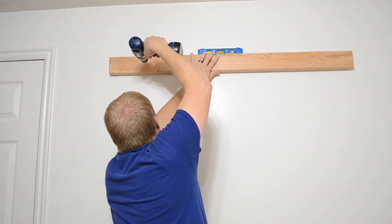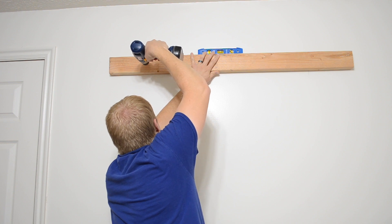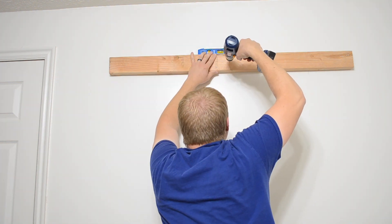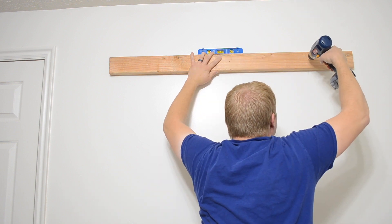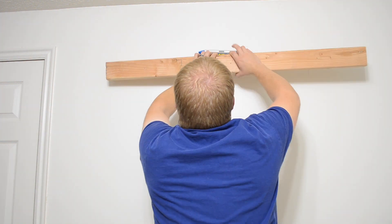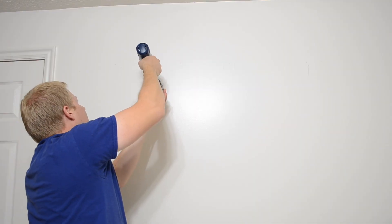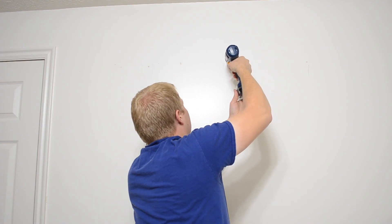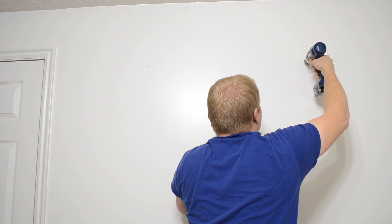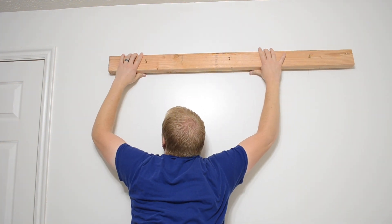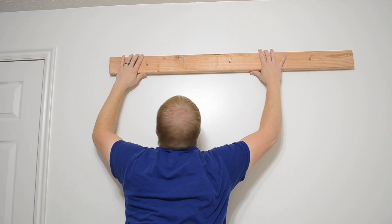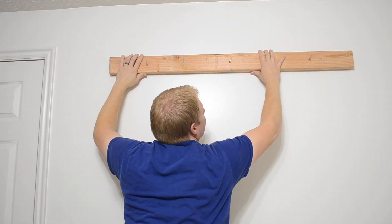I then drilled three pilot holes, one at each of the studs, using a 7/64ths drill bit. In my case, my drill bit wasn't long enough to go all the way in, so I re-drilled them after I pulled the beam off the wall. With my three-inch screws already part way through the board, I was able to line it carefully with the holes, and then drive them home.